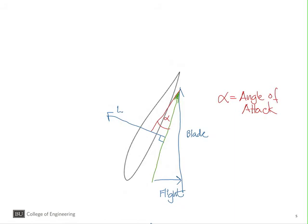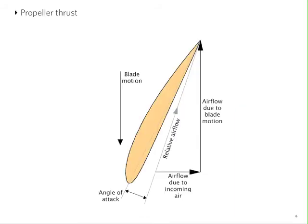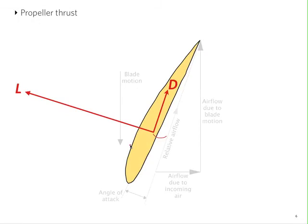So now let's look at this sketch more organized. Here we have blade motion going down and the airflow due to the blade motion going up. We have the plane going from right to left, and so the airflow due to the incoming air is from left to right. The vector sum of these two is the relative wind. The angle of attack is formed between the relative wind and the chord of the profile, and we have a force of lift and a force of drag - lift perpendicular to the airflow, drag parallel to the airflow.